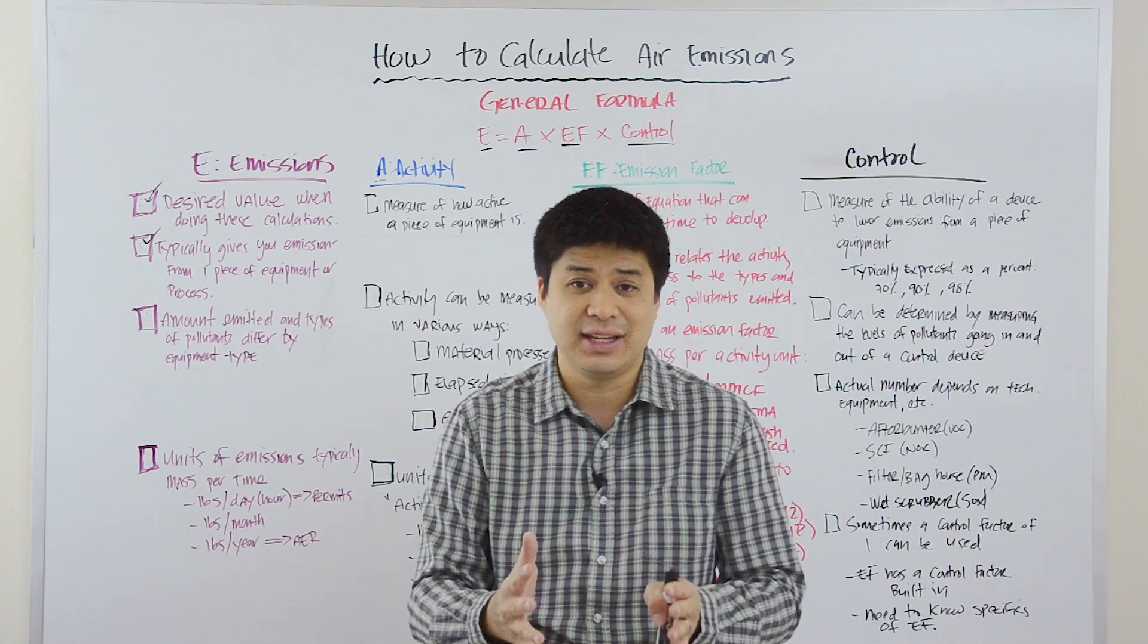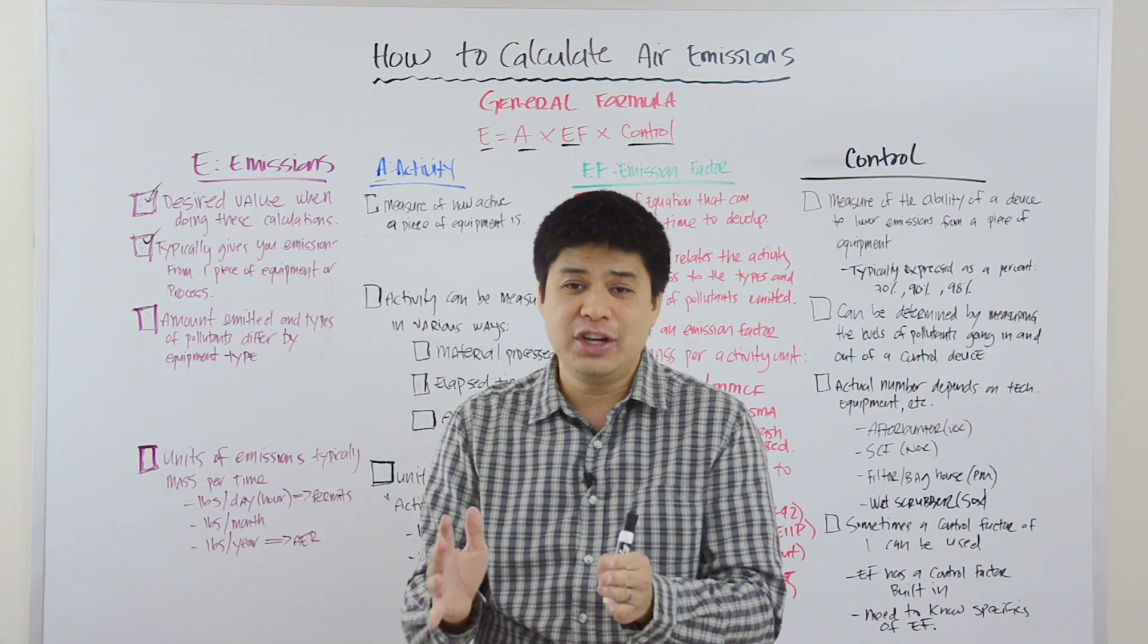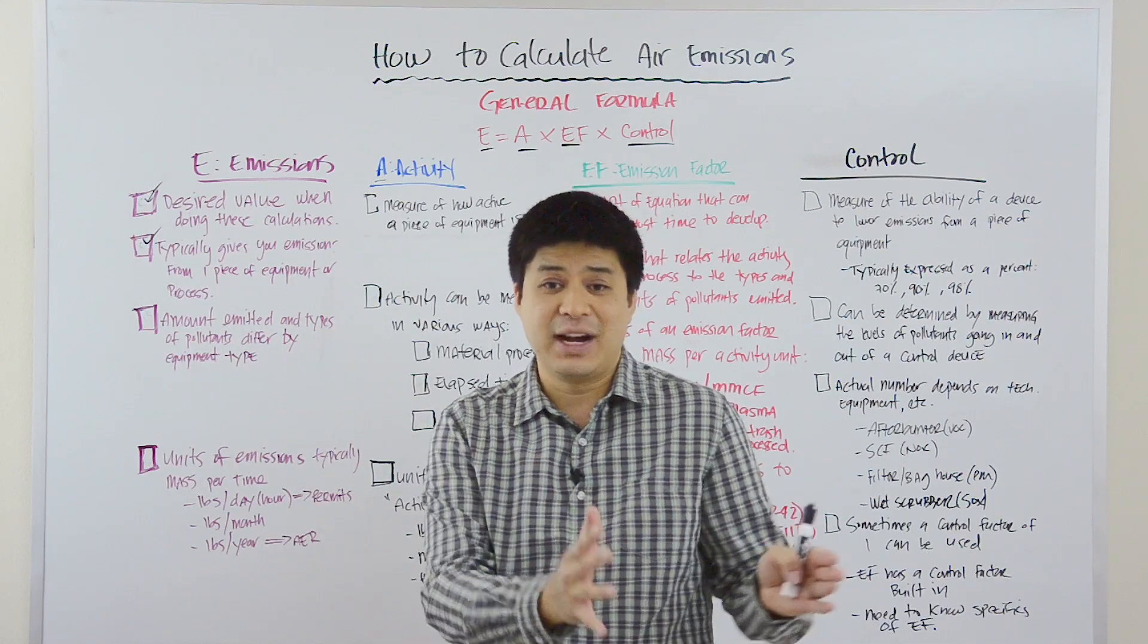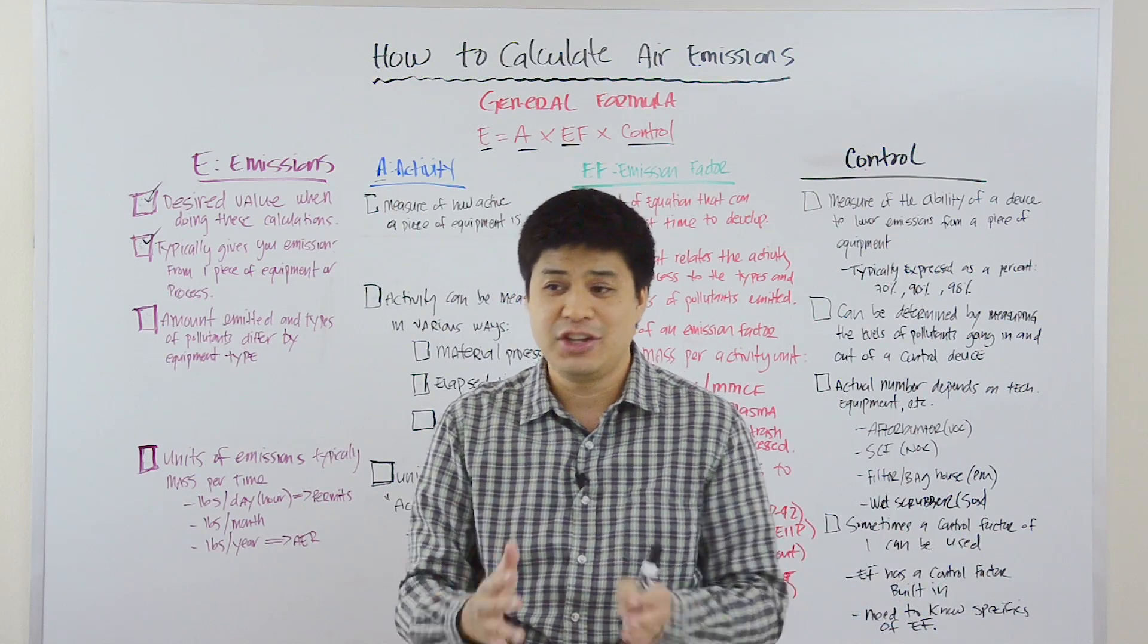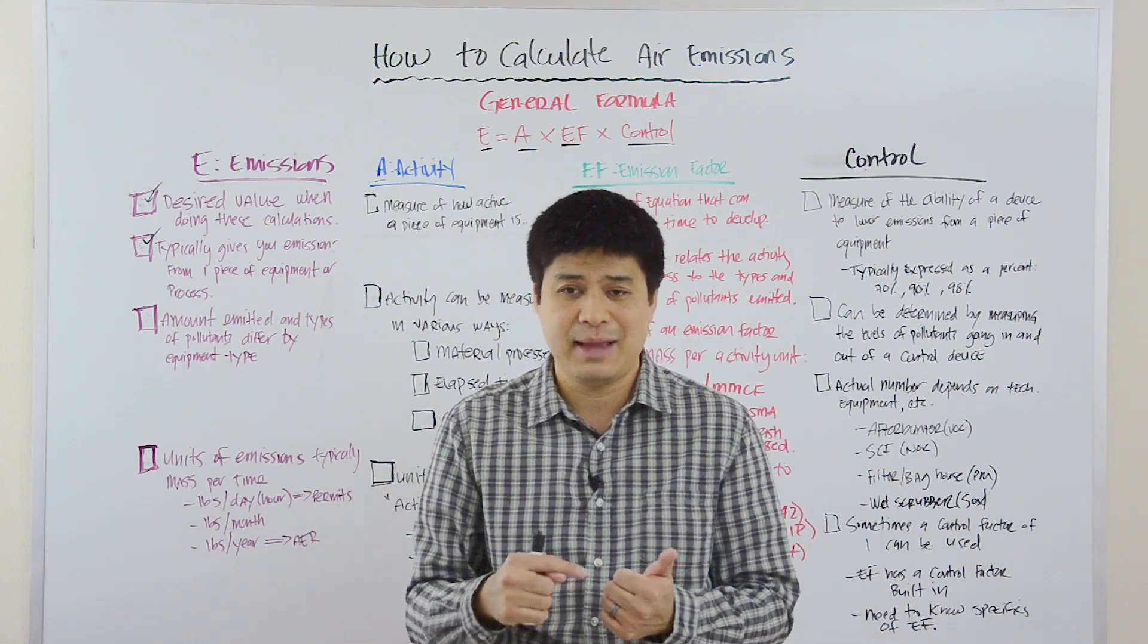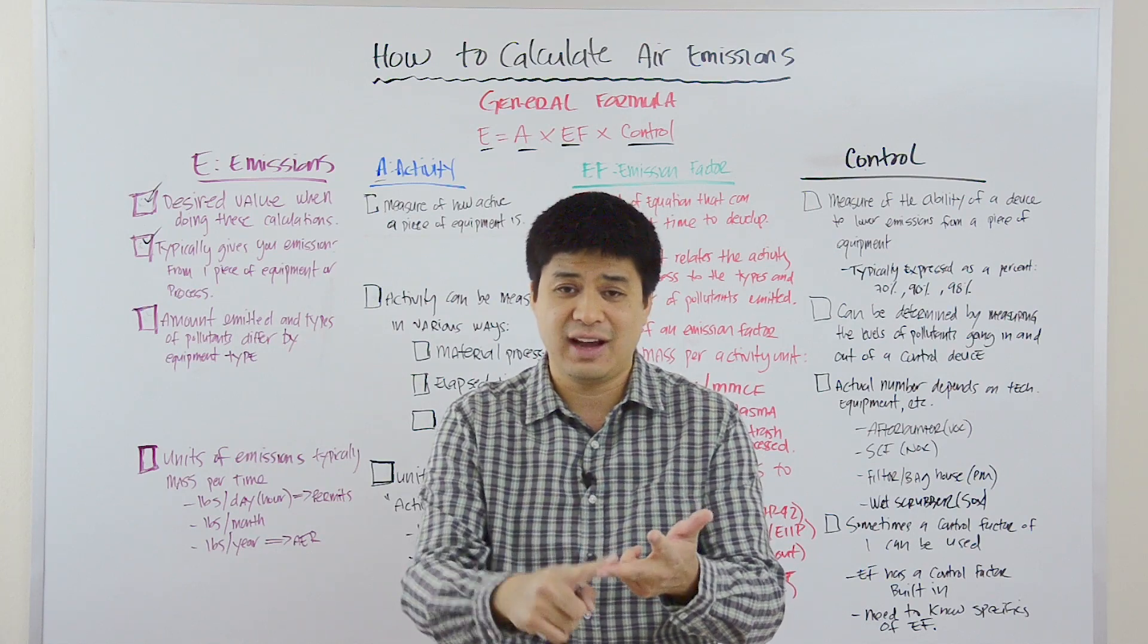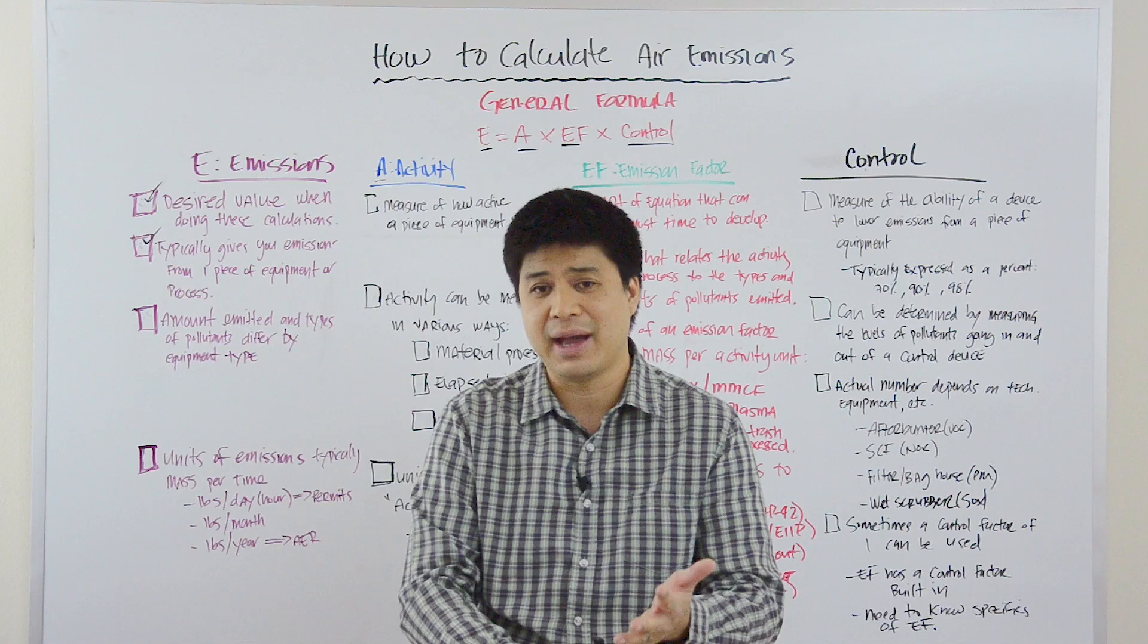On the other hand, if you have a boiler or an engine, then combusting fuel should result in combustion contaminants. It makes sense. You're combusting fuel, you're going to get combustion contaminants. Combustion contaminants include NOx, SOx, volatile organic compound, CO, and particulate matter.